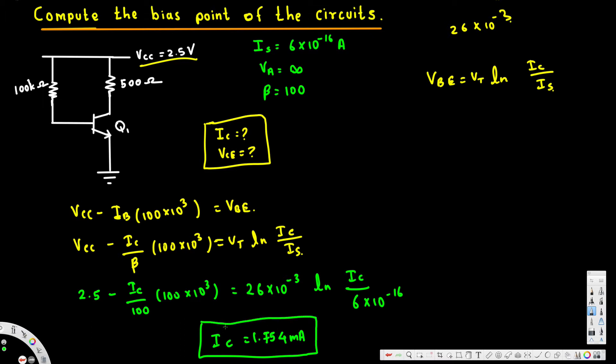The next thing is we are going to find out what is Vce. To find out Vce, collector emitter voltage, Vce can be written as Vcc minus...